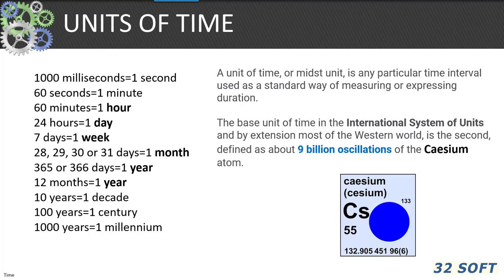The unit of time, sometimes called a midst, is a particular interval of time used in a standard way of measuring or expressing duration. The base unit of time in the international system of units is a second, or 9 billion oscillations of the cesium atom. We don't use seconds much in QAD, as the common time units are minutes, hours, days, weeks, months, quarters, and years.